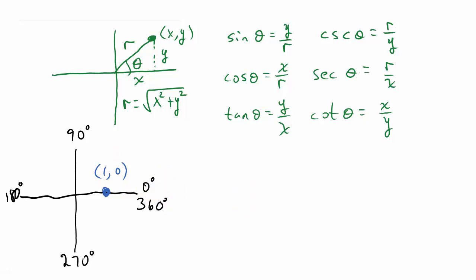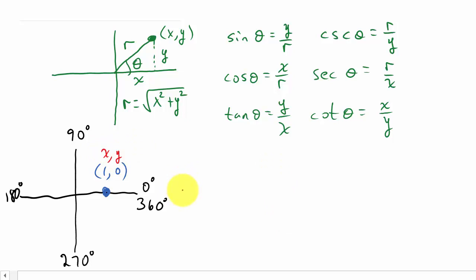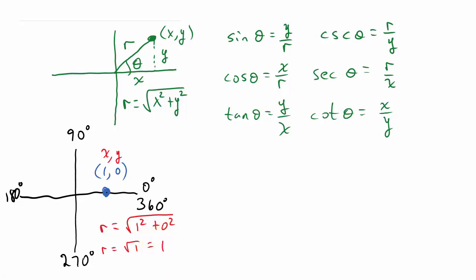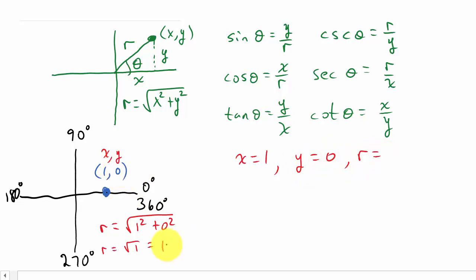So what we need to do now is figure out what x, y, and r are. We know x and y, but we also need r. Well, r is equal to the square root of x squared plus y squared. So r is the square root of 1 squared plus 0, which is the square root of 1, which is 1. So we have: x is equal to 1, y is equal to 0, and r is equal to 1.